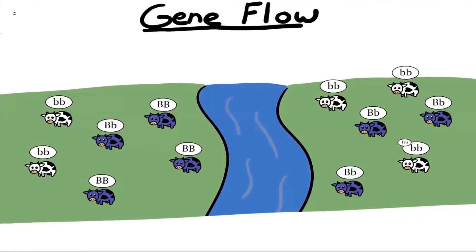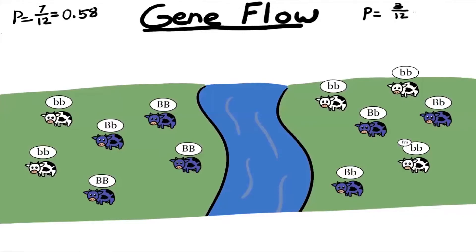Let's start off by measuring the allele frequency of the dominant allele for each of these populations. For the first population, we have seven dominant alleles out of 12 alleles total, which gives an allelic frequency of 0.58. In the second population, we have three dominant alleles out of 12 alleles total, resulting in an allelic frequency of 0.25.